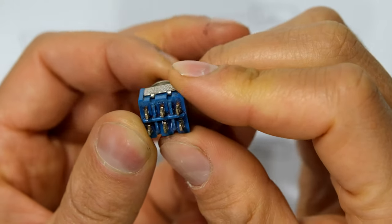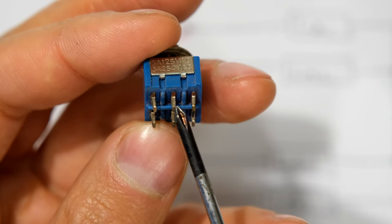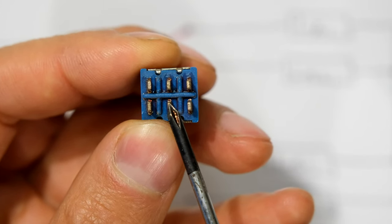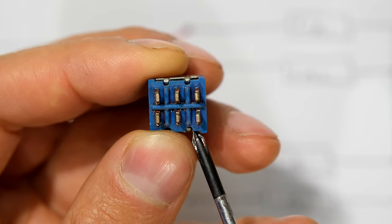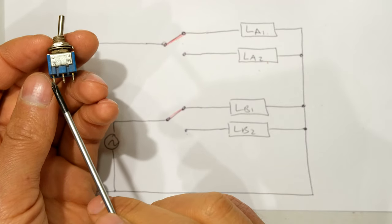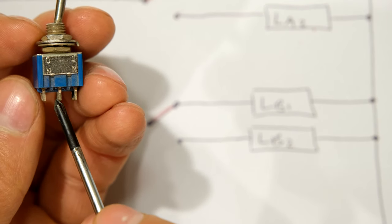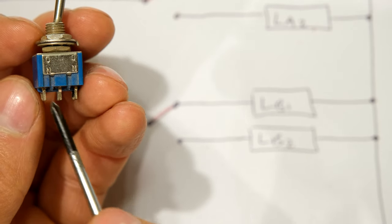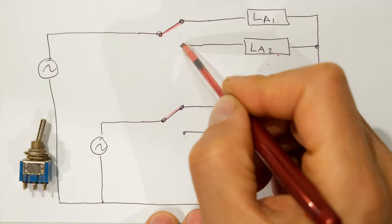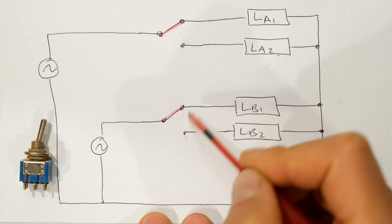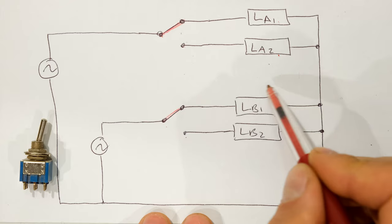This is a toggle switch — a small one — but it works the same way. You can see there are six terminals. On the top side: one input, two outputs. On the bottom side: one input, two outputs. So we've got two input connections and four output connections — that is why we have six connections altogether on this small toggle switch. For the top part of the switch you have a single pole double throw, and for the bottom part also a single pole double throw — so altogether double pole double throw, although this part of the switch is isolated from the other part.